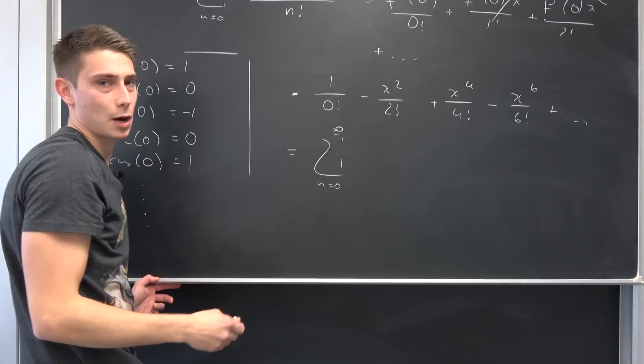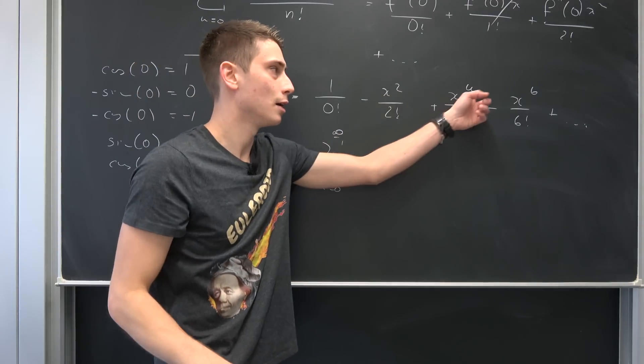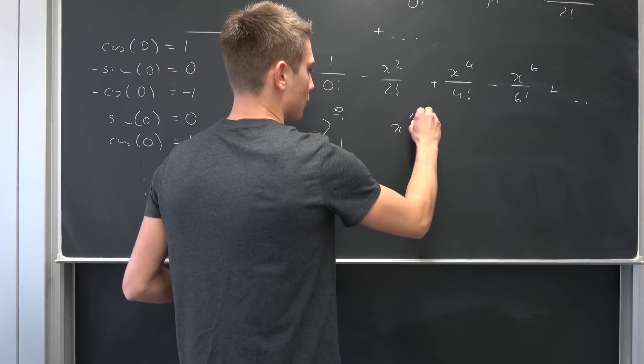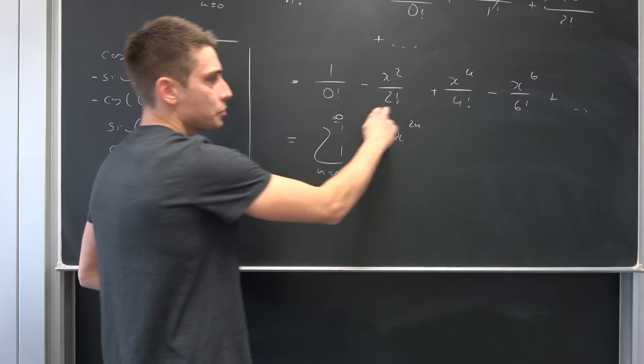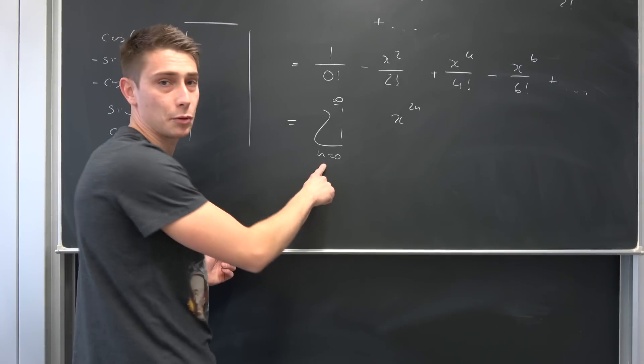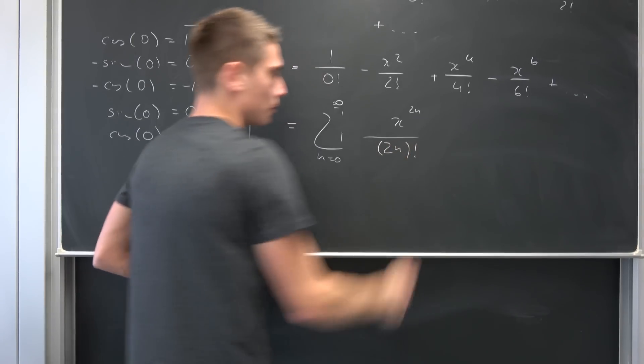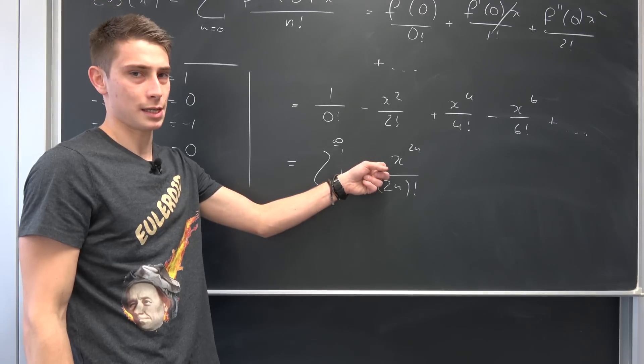So x to the 2n power. You see we are only going to take the even terms right here. So x to the 2n power over 2n factorial respectively where n is out of natural numbers with zero. So 2n factorial.